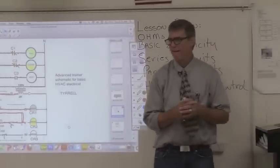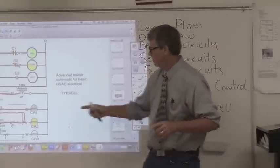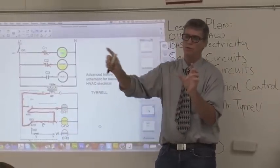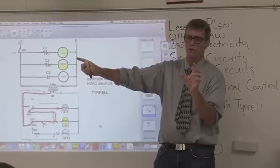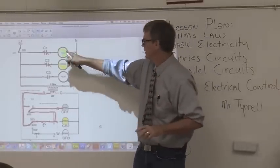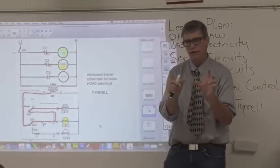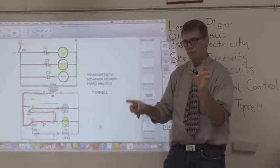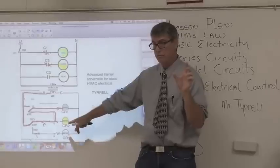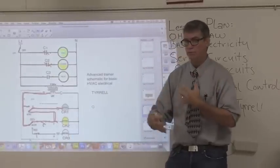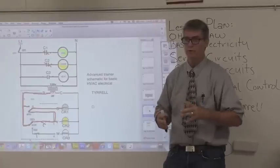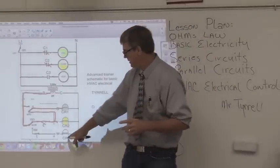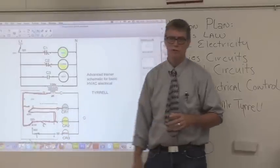G is the terminal inside the thermostat that sends 24 volts out to start the indoor fan motor. Y is the output of the thermostat that starts the condenser and the compressor. The compressor is the heartbeat of the whole operation — it starts the whole cooling cycle. And W is what starts heat.